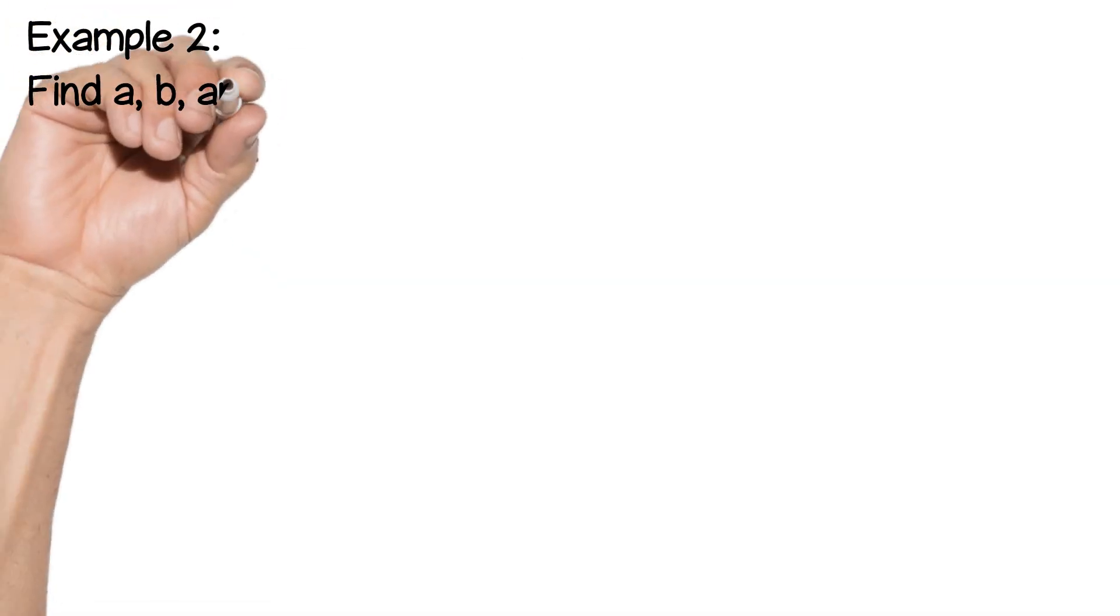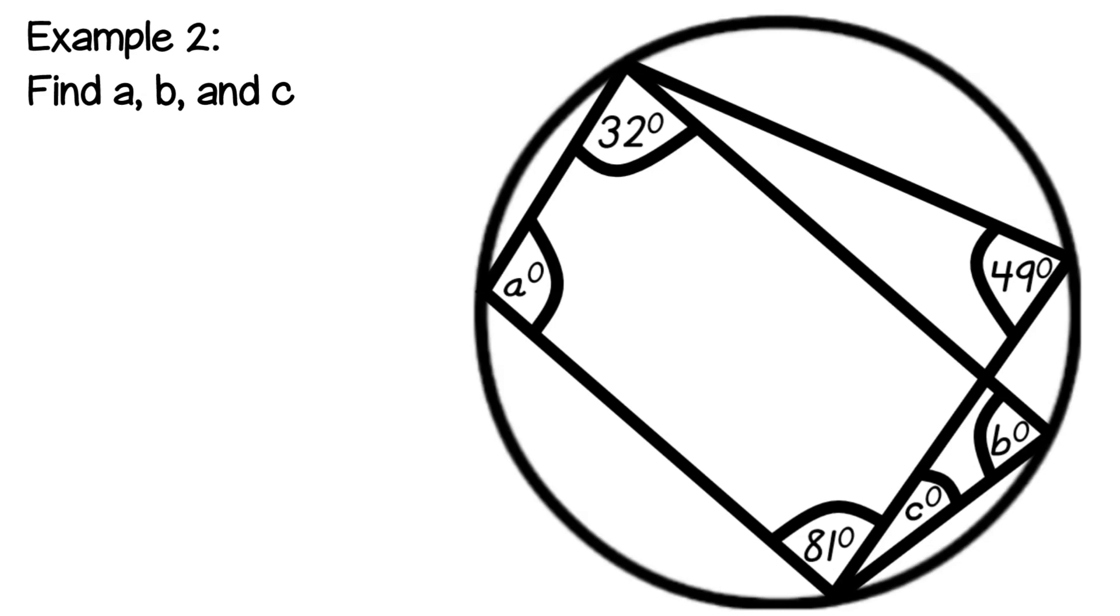Example two. Find a and c. Now this diagram looks a little bit more complex because we have overlapping quadrilaterals. All four corners touch the circumference for both quadrilaterals. So let's take a look at our first pair.